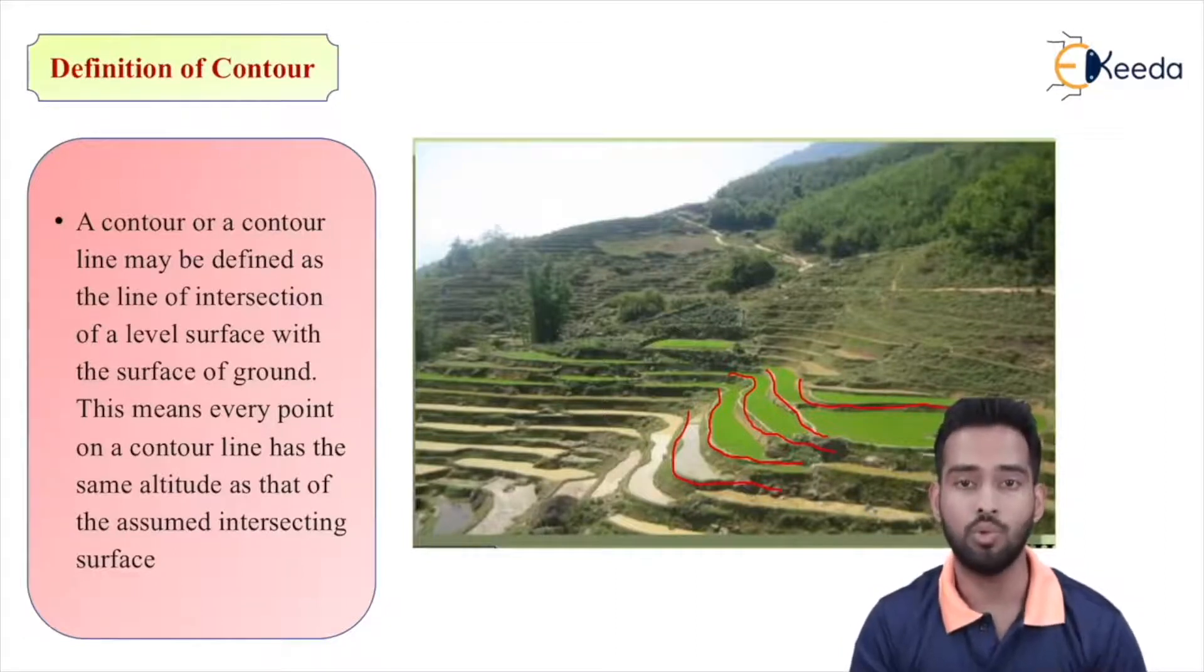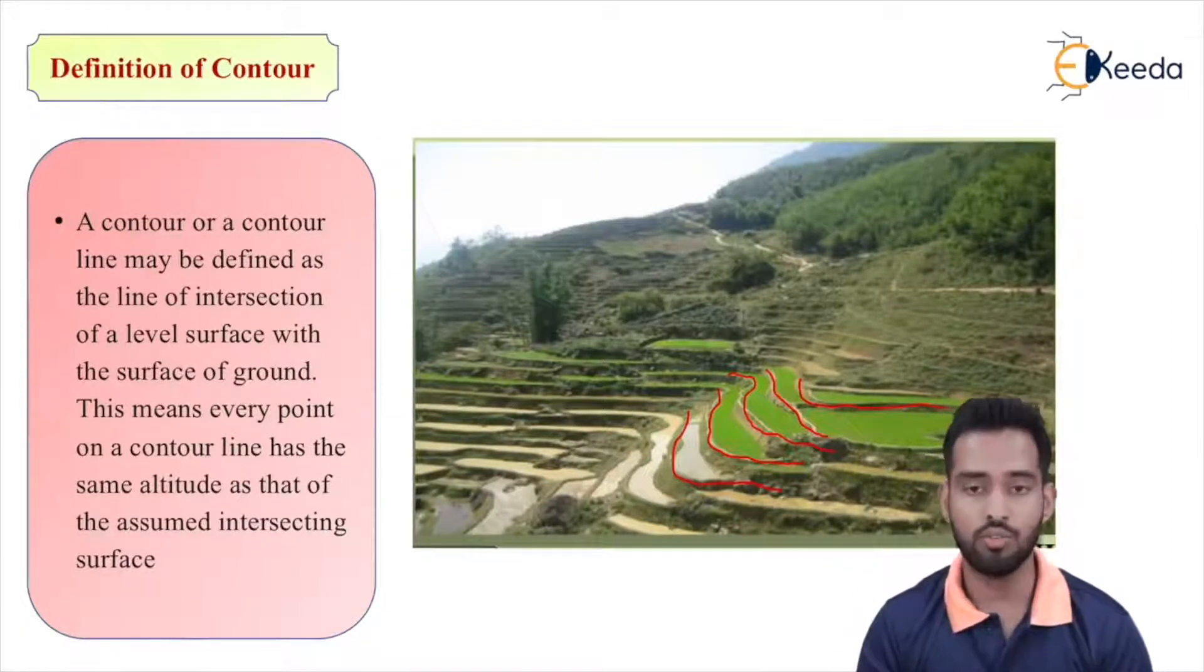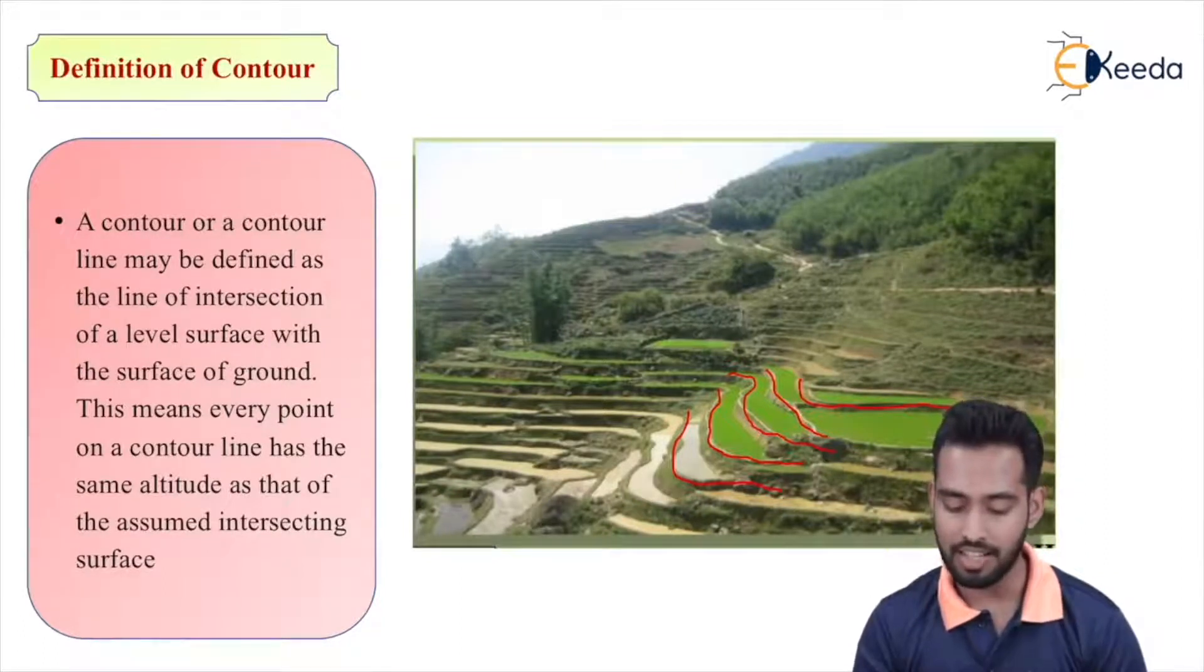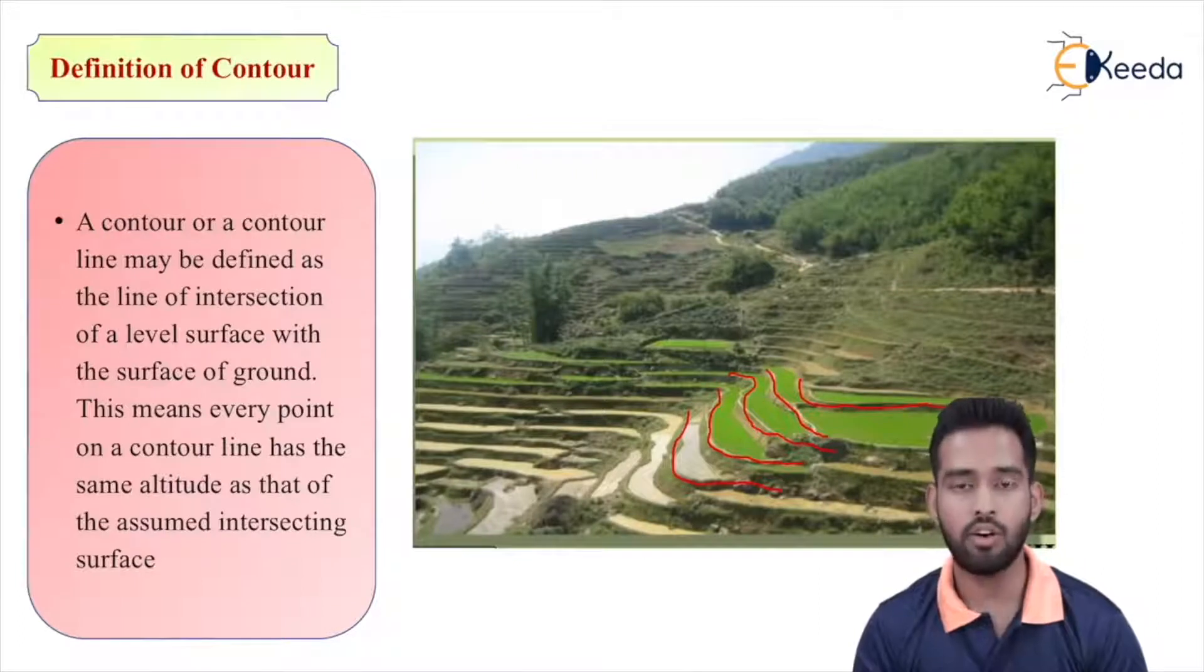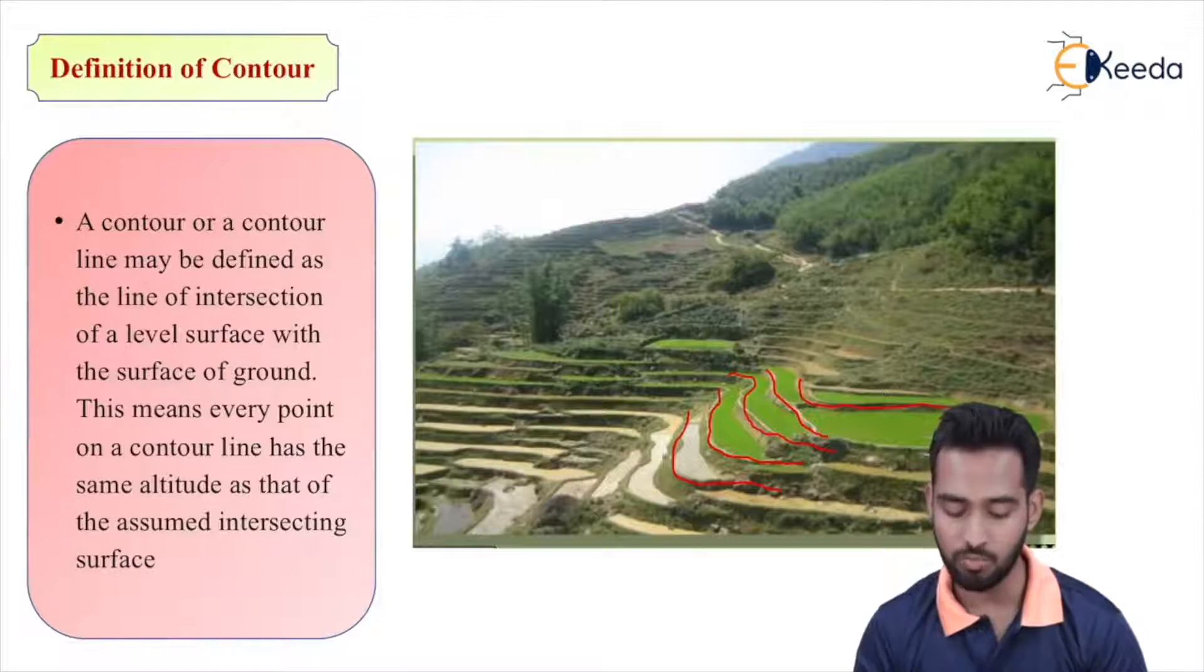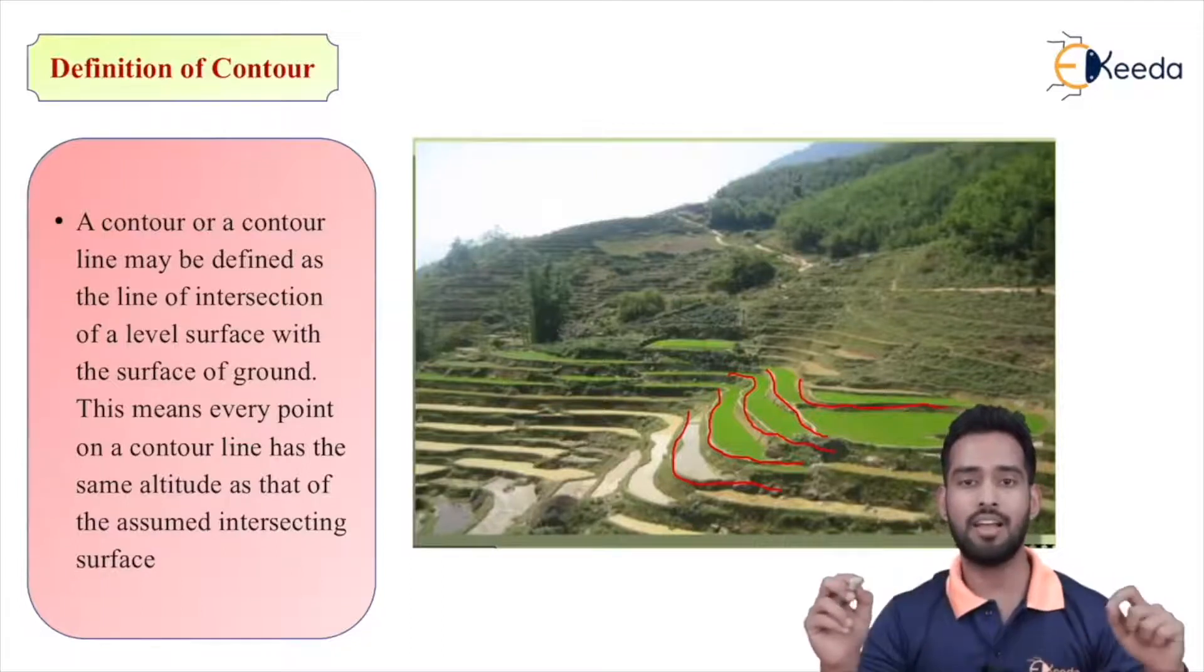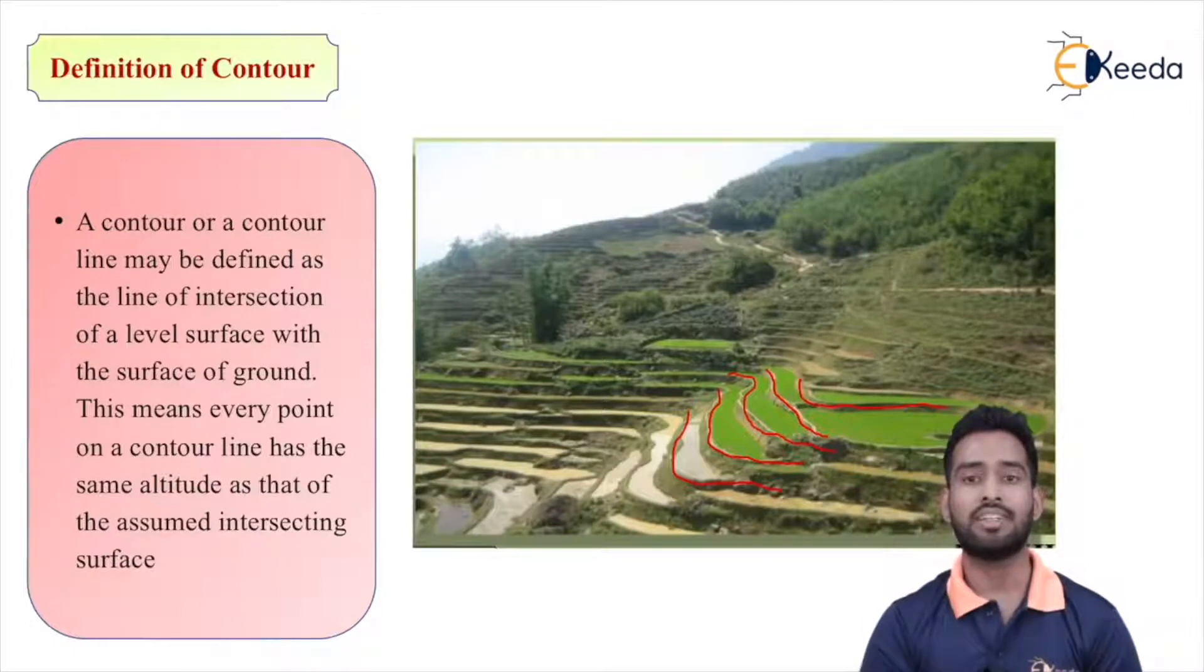So whenever we draw a map, a contour map will show us the lines of equal elevation. As you can see in the definition: a contour or contour line may be defined as the line of intersection of a level surface with the surface of ground. This means every point on a contour line has the same altitude as that of the assumed intersecting surface. All the points having the same elevation, the line joining them are known as contour lines.